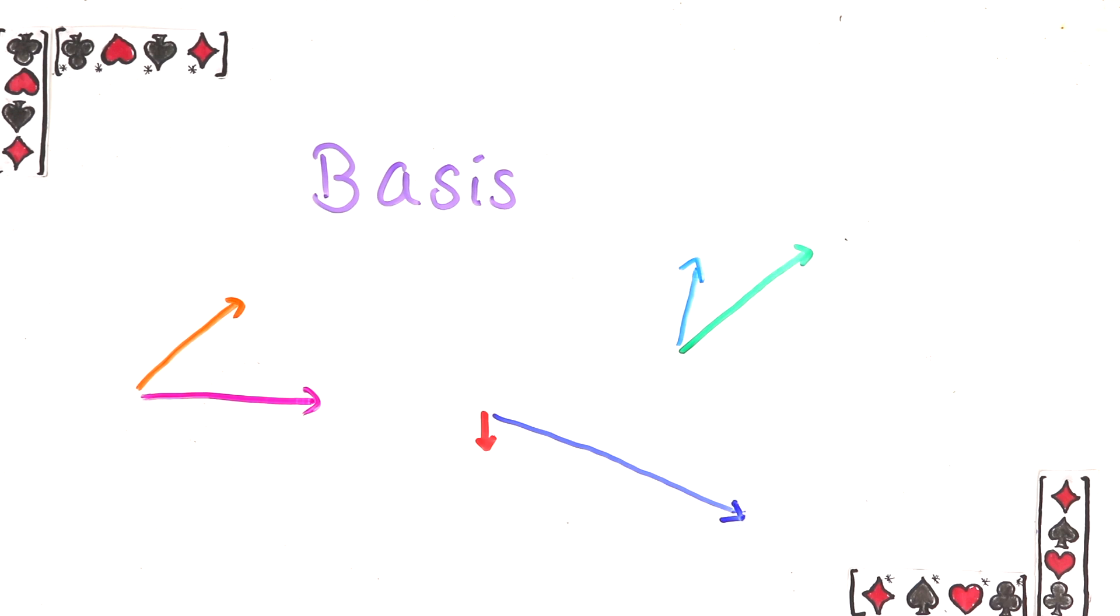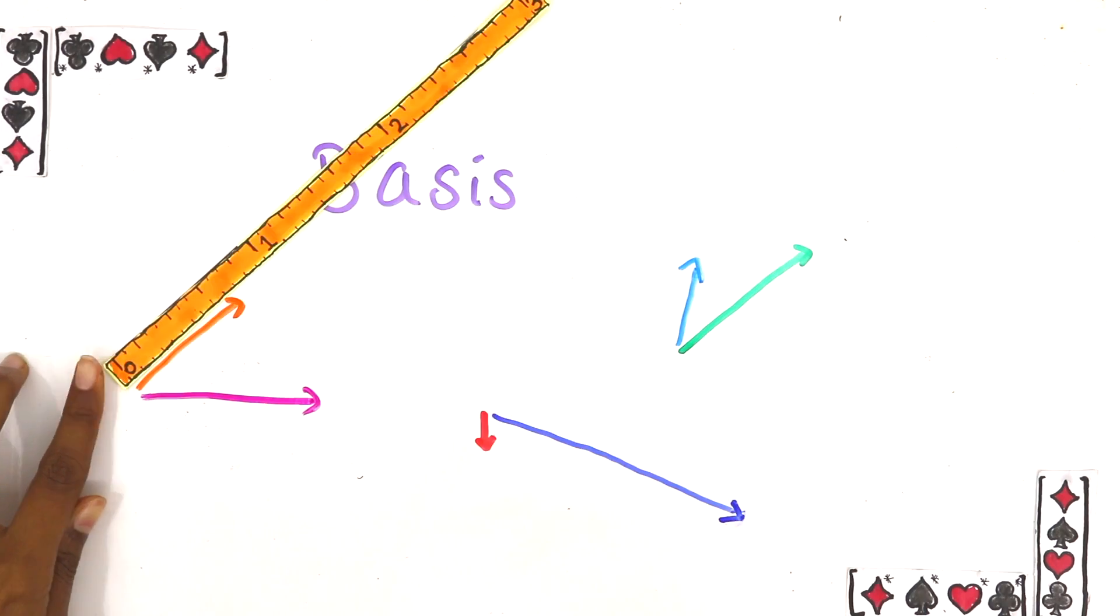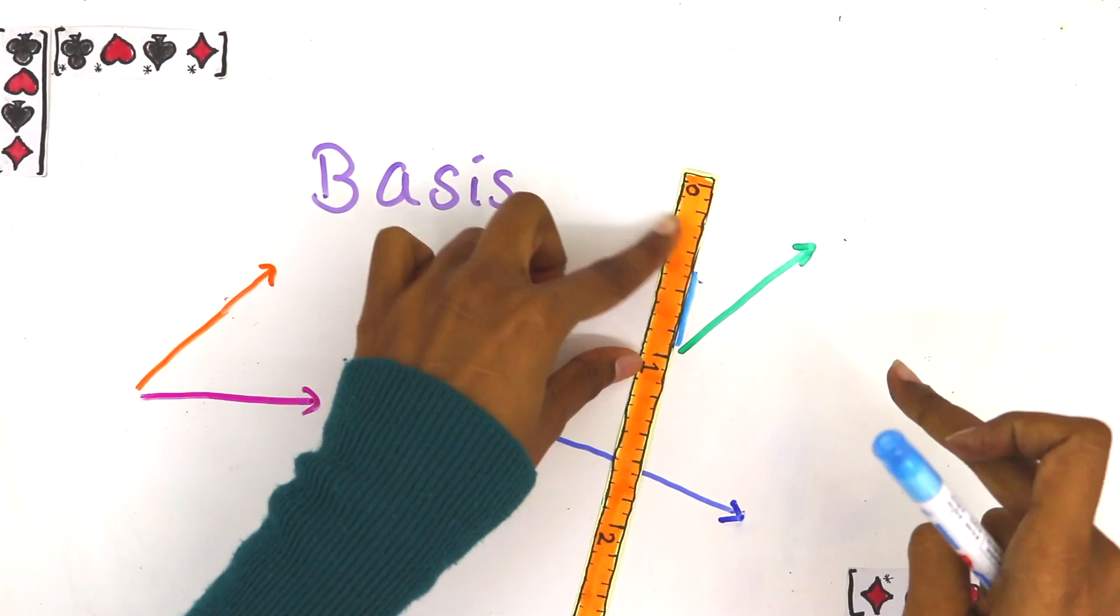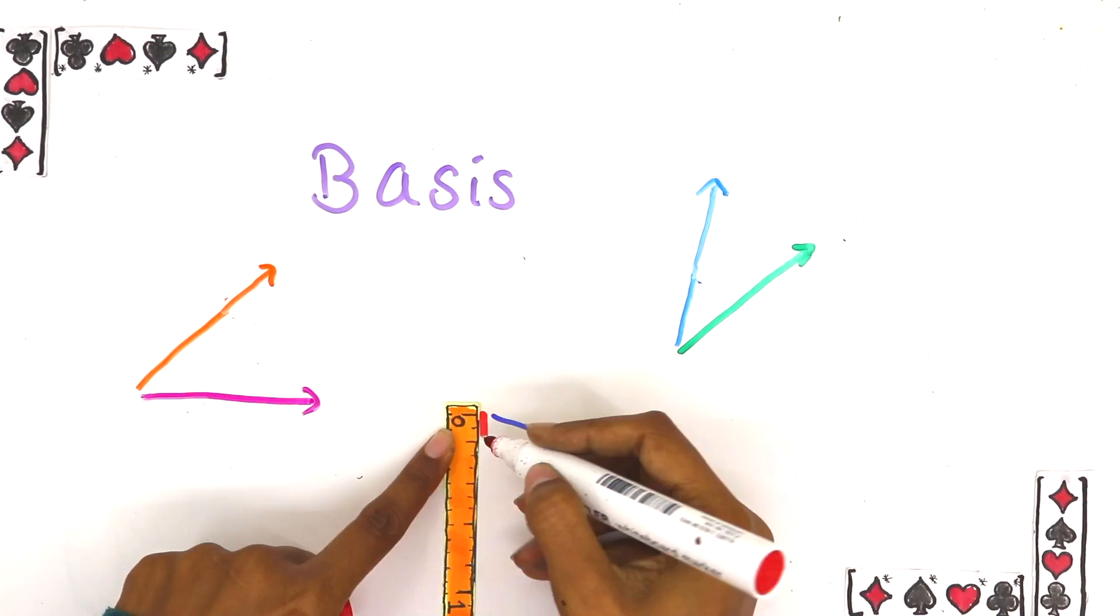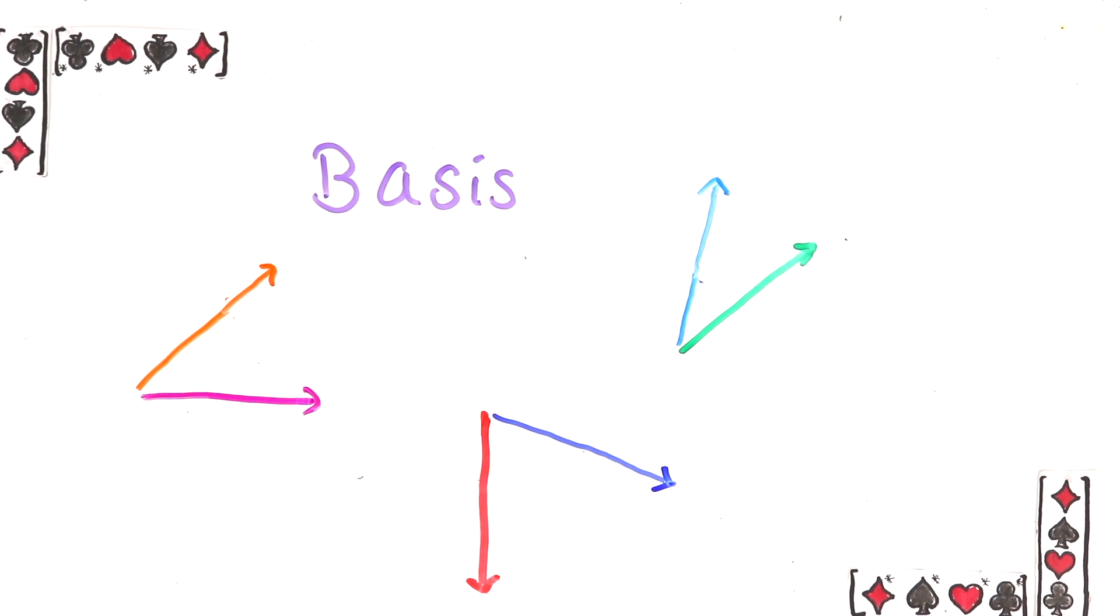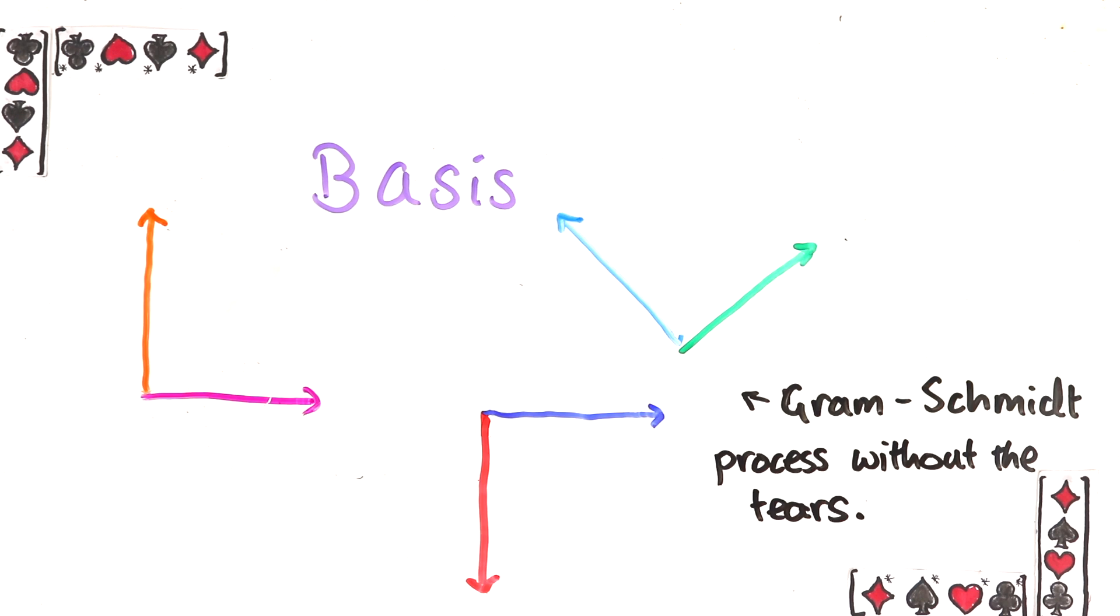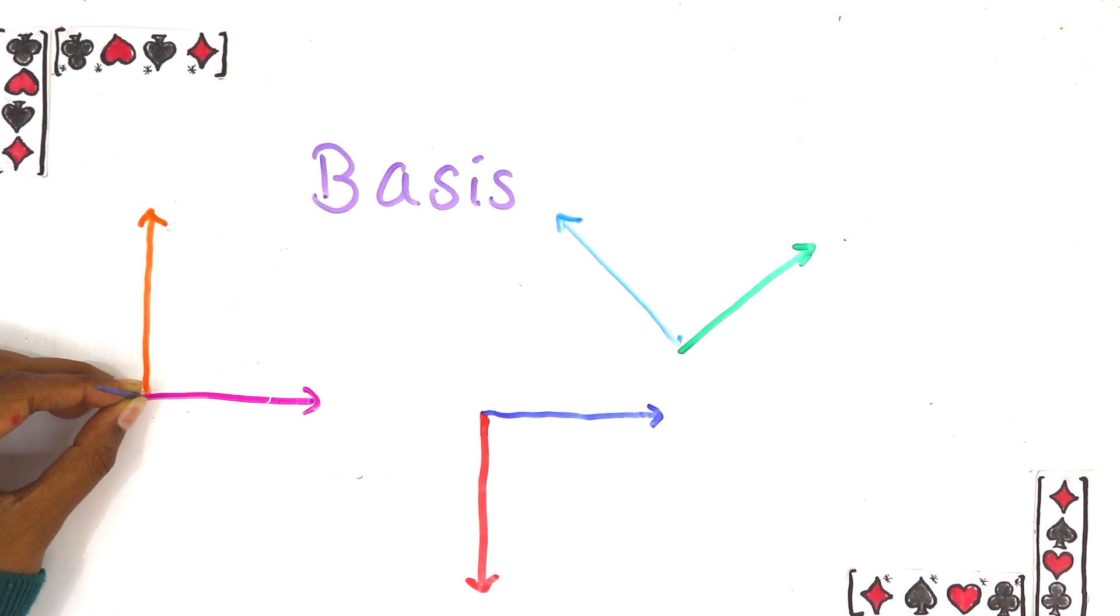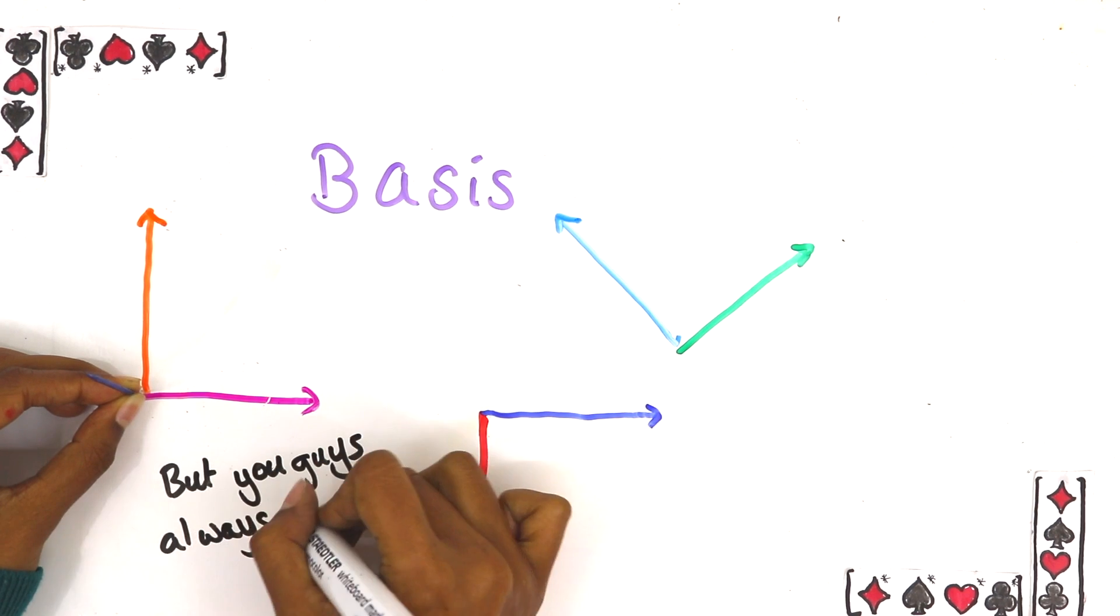An orthonormal basis has two extra properties. First each vector in the basis has to have length 1. The second is that every vector in the basis has to be orthogonal to each other. So these things are all orthonormal bases now. By the way if we had 3d vectors we'd have 3 basis vectors and each one of them would have to be orthogonal to the others.